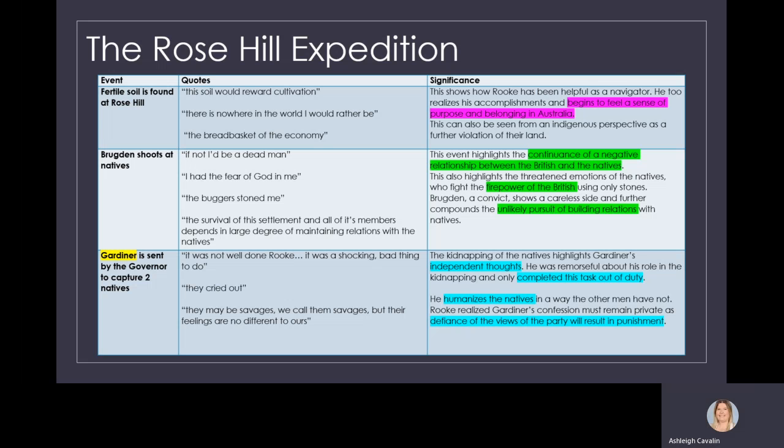The Rose Hill Expedition is very successful. Fertile soil is found at Rose Hill. Rook was particularly helpful as a navigator. He realizes his accomplishments and begins to feel a sense of purpose and belonging in Australia. However, this can also be seen from an Indigenous perspective as a further violation of their land.